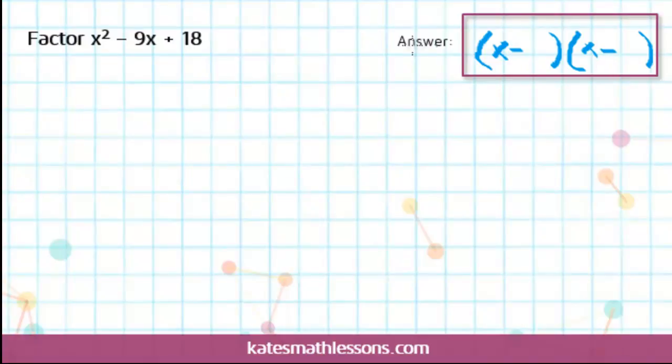A negative times a negative will equal positive, and then our middle terms will both be negative, so we'll be able to get them to combine to a negative 9x. The next thing you want to do is figure out what are your options for these last two numbers. We know they need to multiply to 18, so let's list out some numbers that multiply to 18.